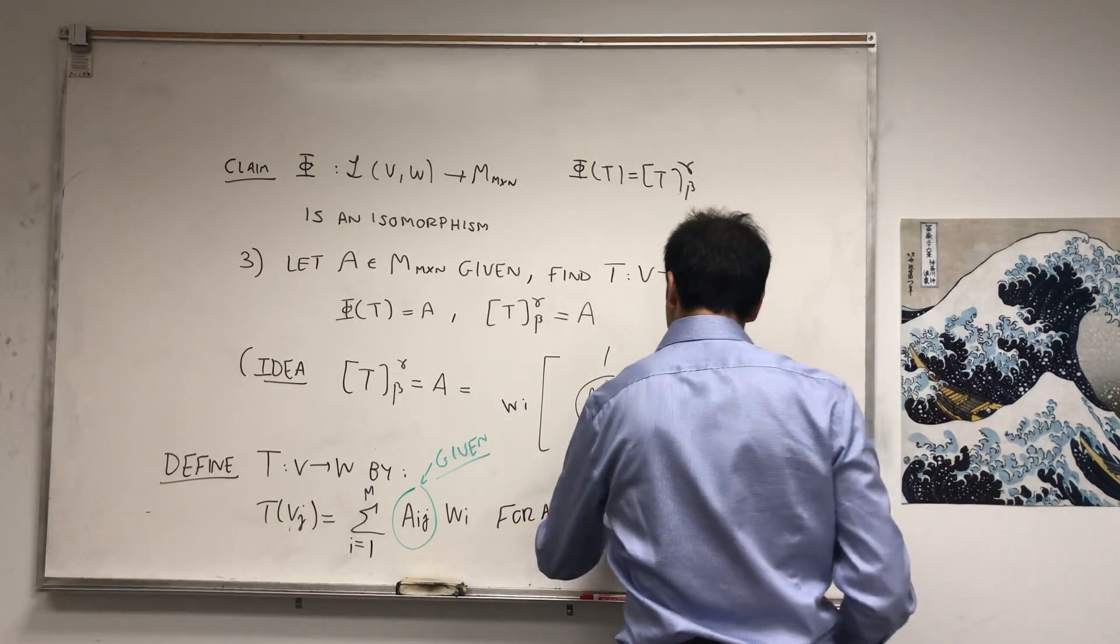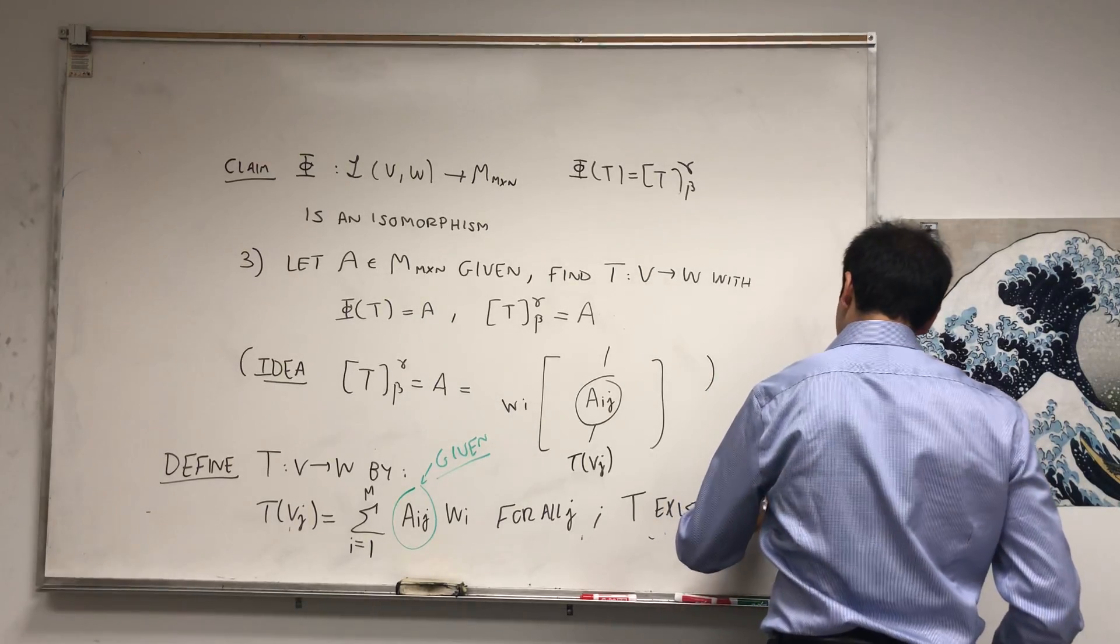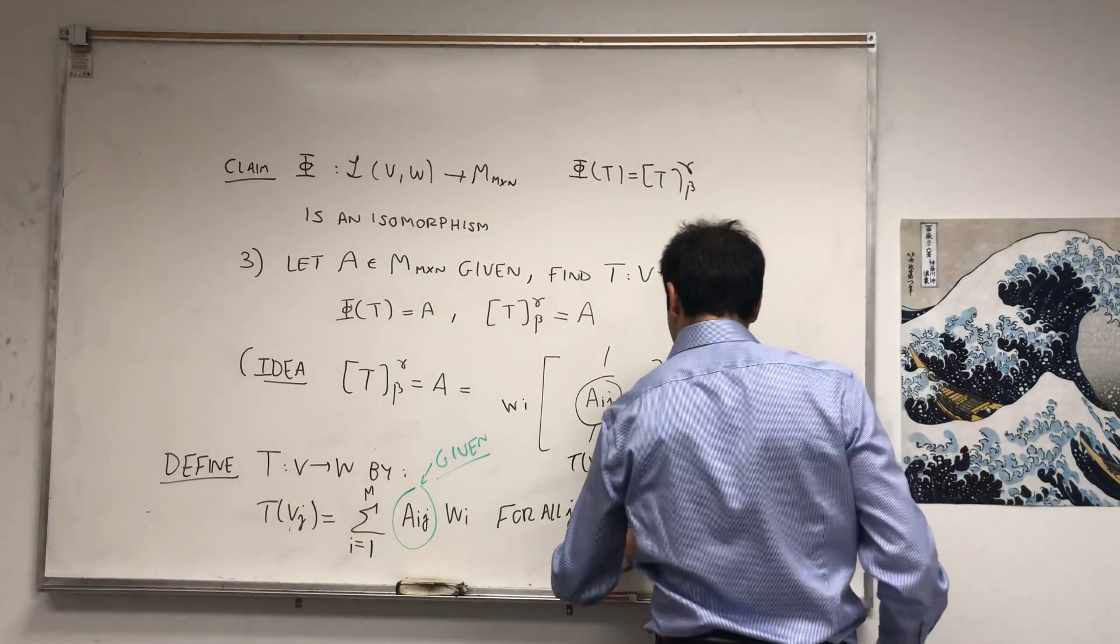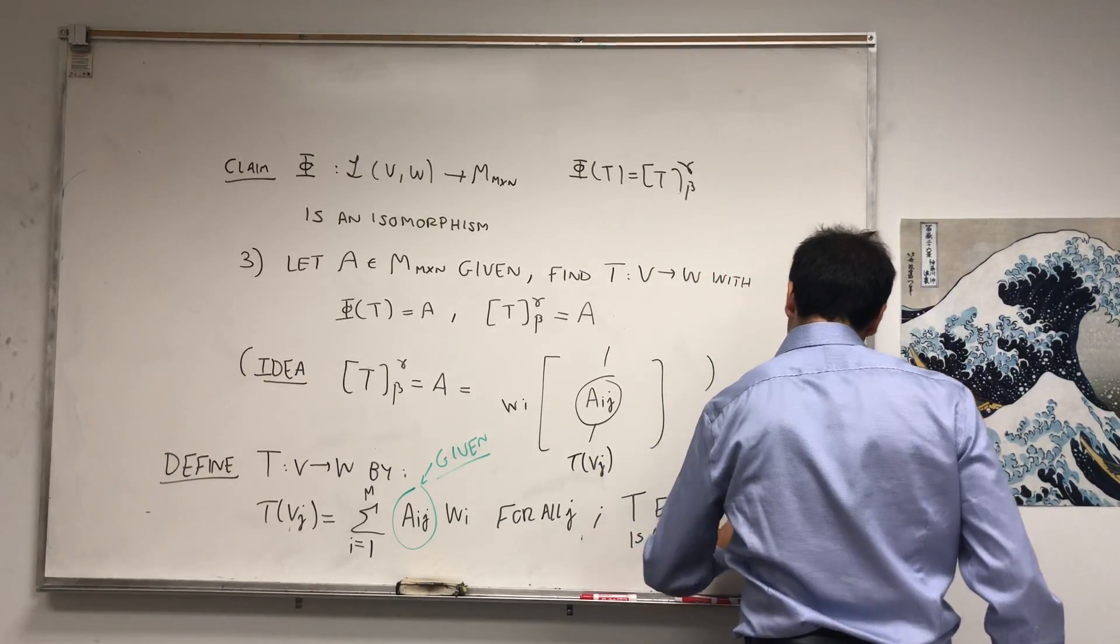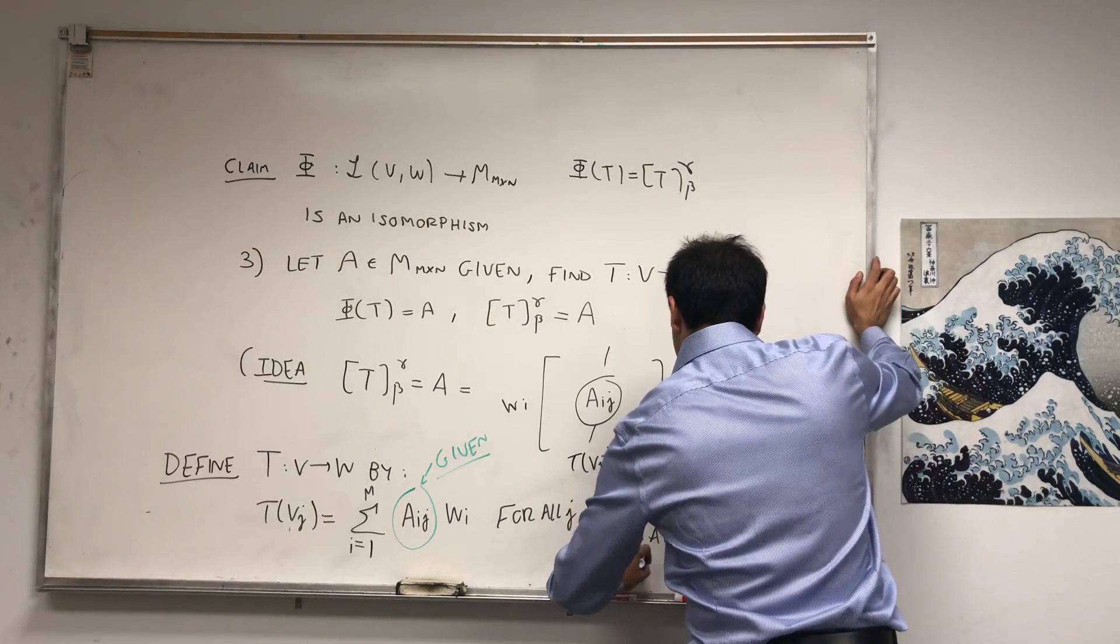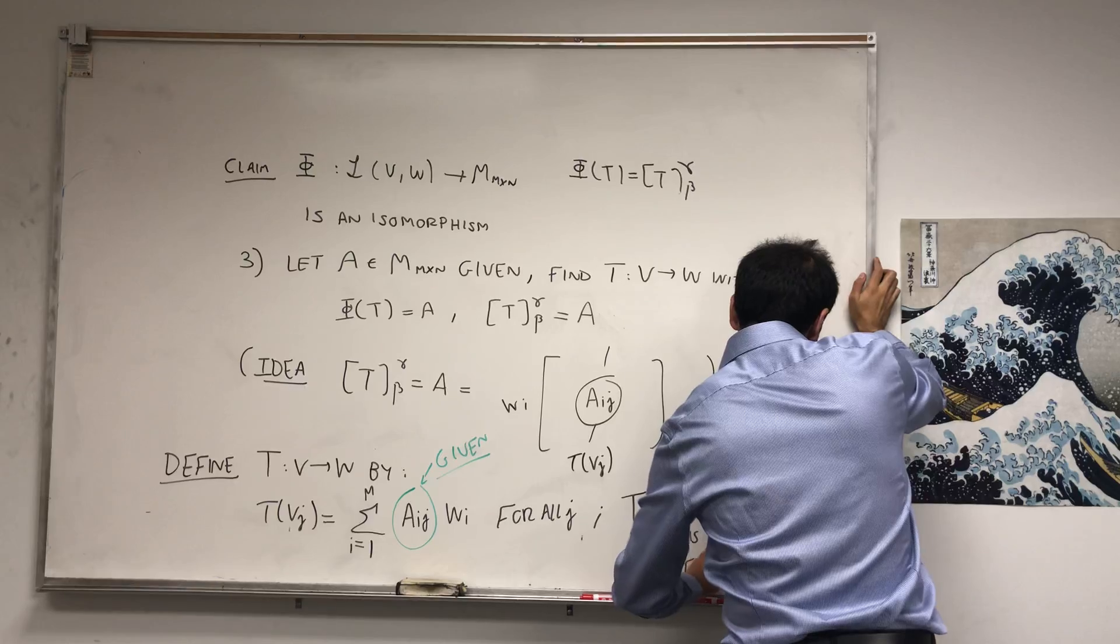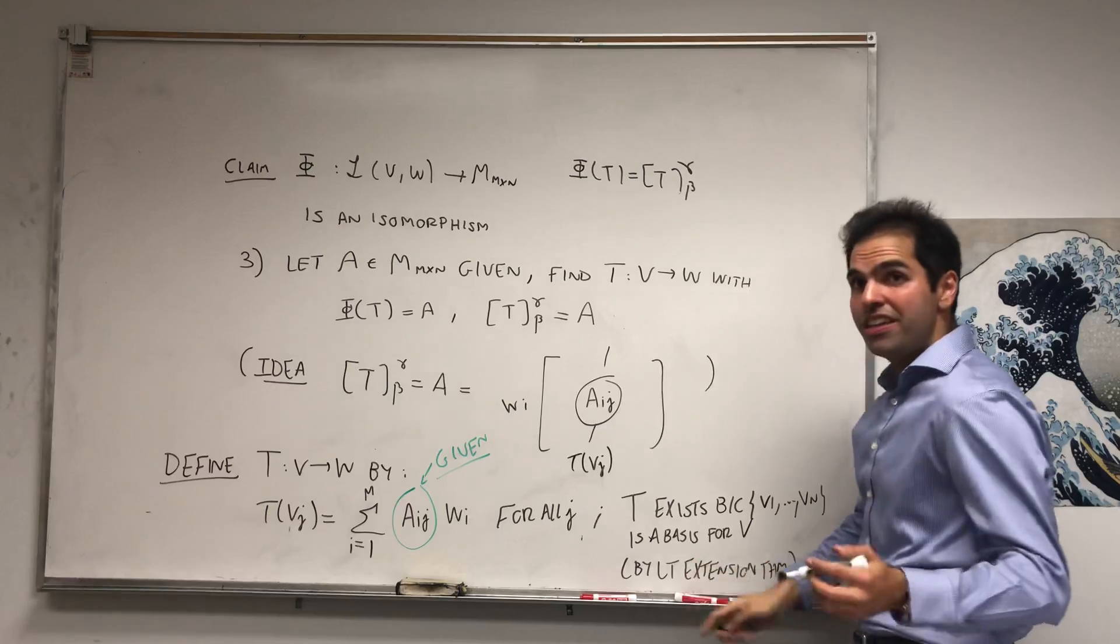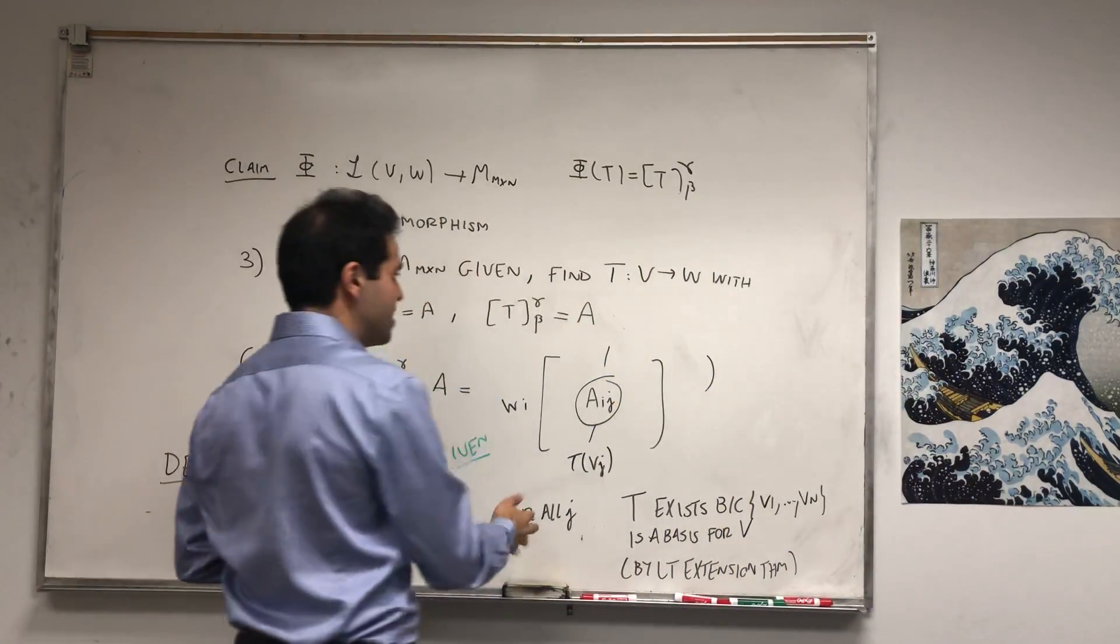And then T exists because V1 up to Vn is a basis, and that's what's called the linear transformation extension theorem, by LT extension theorem. And I have a video on this if you're curious what this looks like.